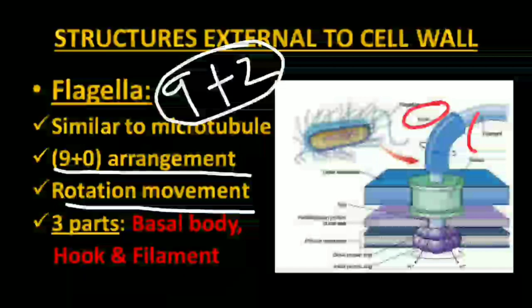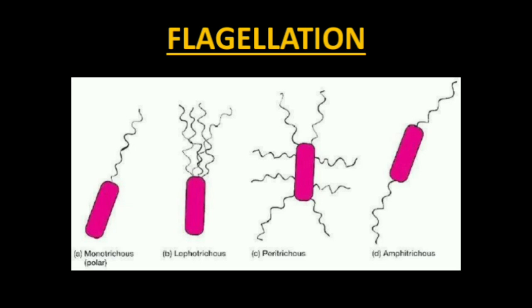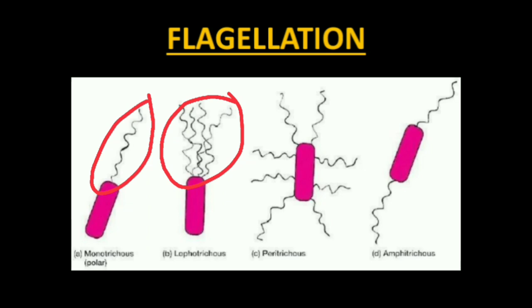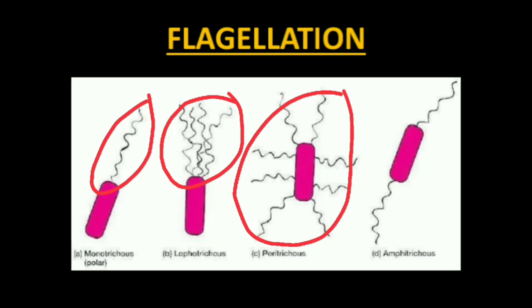Flagellation means how many flagella are present and where they are located. Depending on flagellation, bacteria can be of several types: monotrichous has a single flagellum at one end; lophotrichous has two or more flagella at one end; peritrichous has flagella distributed over the entire cell; and amphitrichous has a single flagellum at both ends.